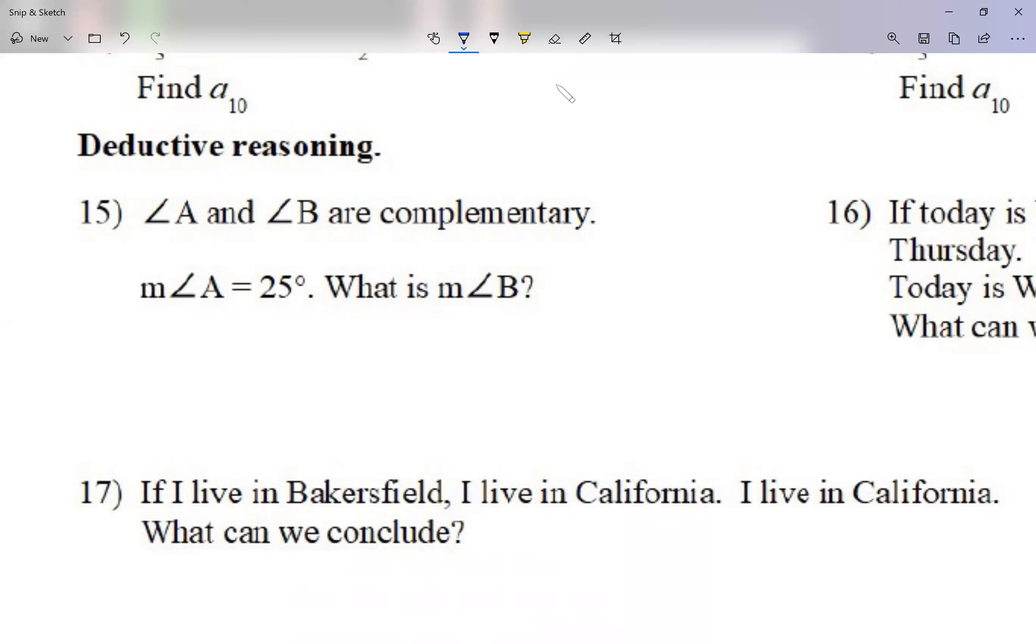...know what the measurement of angle B is. We learn in algebra that when we don't know the value of something, we replace it with x. So I'm going to say right now it's x because I don't know. So for me to solve for the measurement of angle B, I'm going to say 25 plus x is equal to 90, because I was told they're complementary - they add up to 90. Now I can solve for x. Let me subtract 25 on each side. 90 minus 25 is 65, so the measurement of angle B is 65.